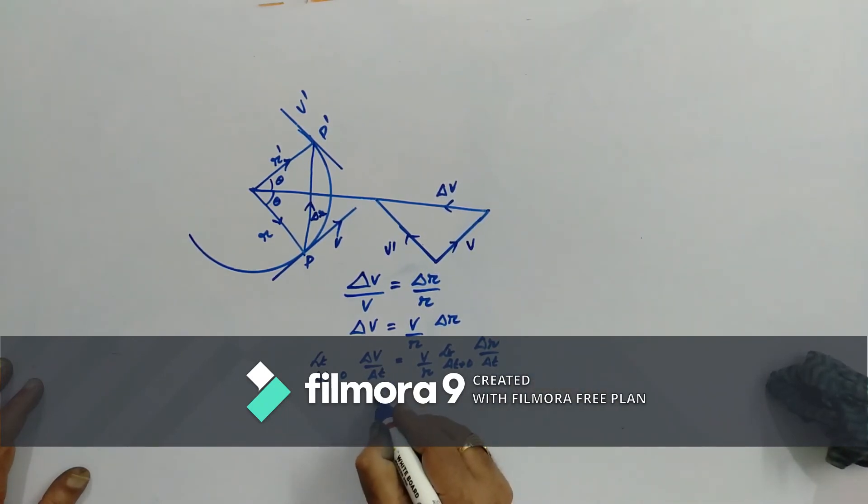We know that this is dV by dt that is acceleration and this is dR by dt that is velocity. Therefore, acceleration is equal to V by R times velocity which gives us V square by R.